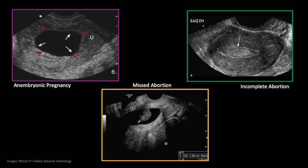Down here we have a missed abortion, where we can see a fetal pole but unfortunately no cardiac activity was noted for this product of conception, and the cervix is closed on this transvaginal view. Up here is a patient who presented with vaginal bleeding after a positive home pregnancy test; the inside of the uterus is thickened with some heterogeneous material but no viable pregnancy.